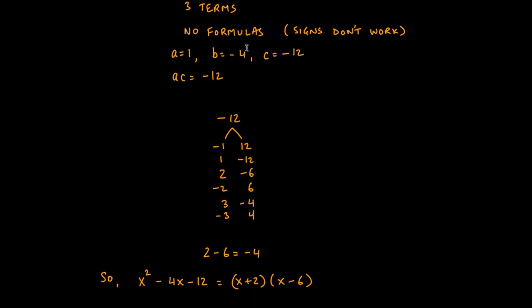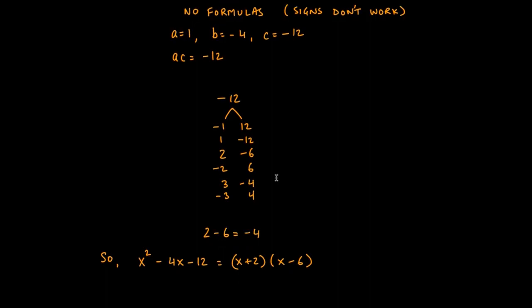We need a pair that adds to -4. From the list, 2 + (-6) = -4, so those two numbers are our answers. The original expression x² - 4x - 12 factors to (x + 2)(x - 6). The 2 comes from the factor pair and the -6 comes from the same pair. If you have any questions, please let me know.